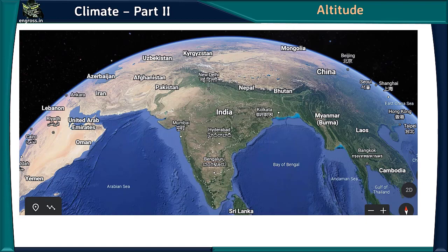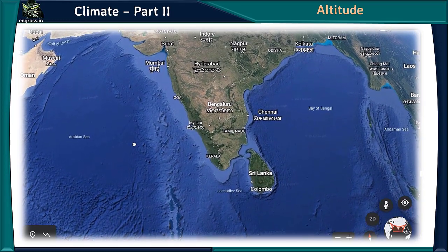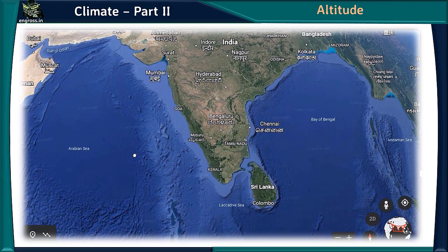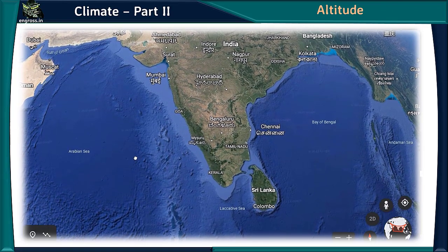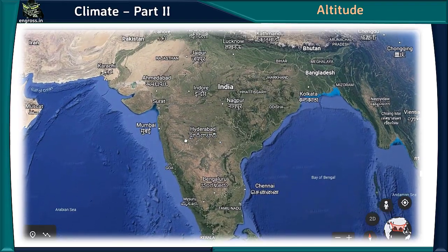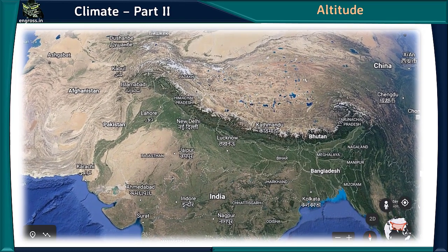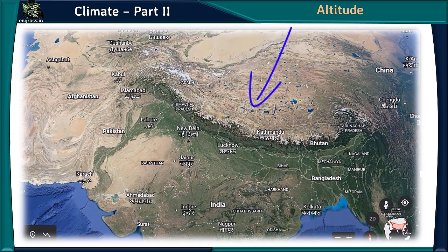Altitude also plays a major role in determining India's climate. India has a coastline of 7,516.6 km, with an average height of just 30 meters from mean sea level, making coastal regions hot and humid. In the north, the massive Himalayas with an average height of 6,000 meters prevent cold winds blowing from central Asia, so India experiences milder winters compared to most other countries at the same latitudes.